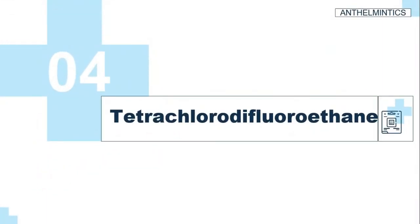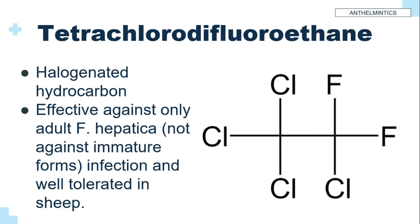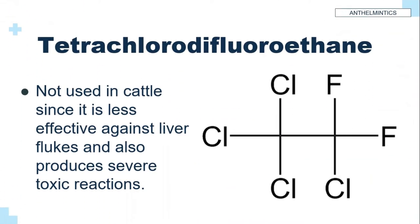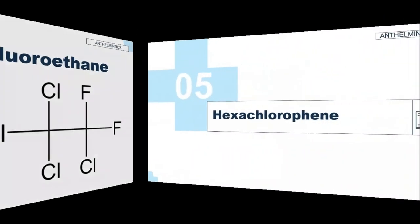The next example is tetrachlorodifluoroethane. It is a halogenated hydrocarbon. It is effective only against adult Fasciola hepatica infection and is well tolerated in sheep. It is not used in cattle, since it is less effective against liver flukes and also produces toxic reactions.